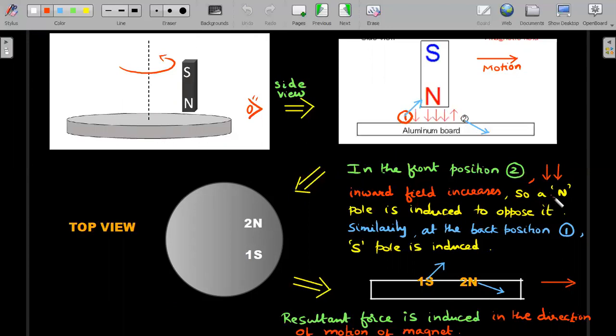So position one is the backward position and position two is the forward position. So I would say in the front position two, the inward field lines will increase. So a North Pole is induced to oppose it. Obviously, you want outward field lines to be generated and outward field lines means what kind of a pole would be induced here: a North Pole.